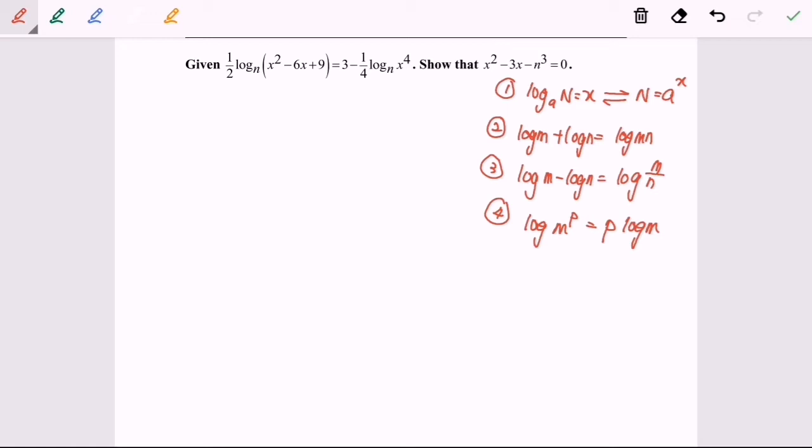Hello everyone, so now I'm going to discuss another example for log and indices. Before we begin, we have to state the rules. Rule number 1: log form can be converted into index form. Rule number 2: log m plus log n equals log mn. Rule number 3: log m minus log n equals log m over n. And finally, rule number 4: log m to the power of p equals p log m.